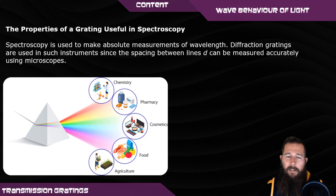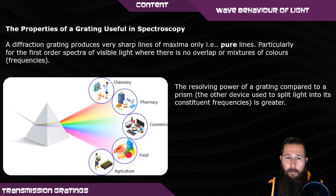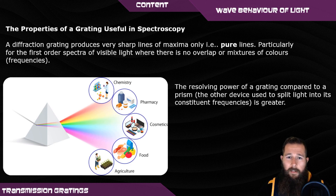Spectroscopy is used to measure different wavelengths of light. Diffraction gratings are used in these scenarios since the spacing between the slits can be measured very accurately using microscopes. The diffraction grating produces very sharp lines for the maximum with minimal interference or overlap, so the resolving power of diffraction gratings is a lot better compared to prisms. This is very important when scientists try to identify the composition of different materials or even stars in the universe — the light analyzed needs to be accurately analyzed for the information to be useful.